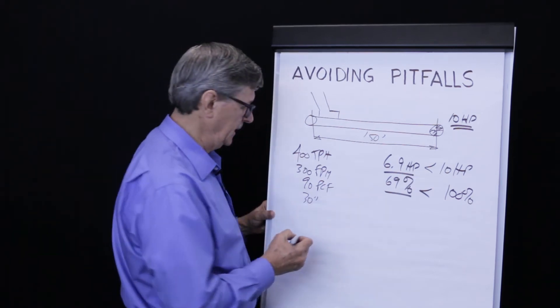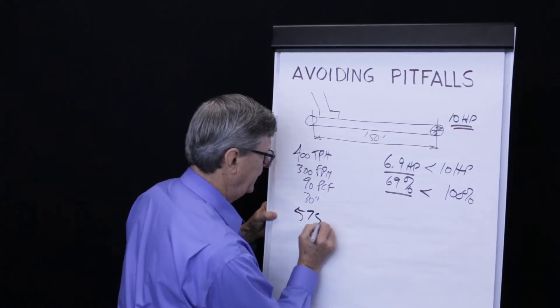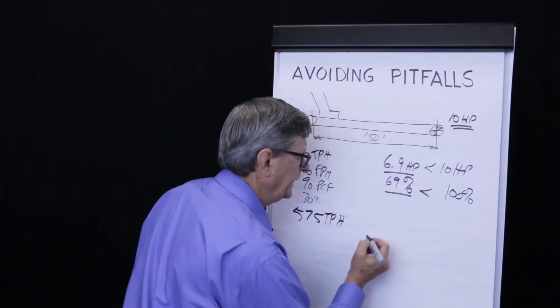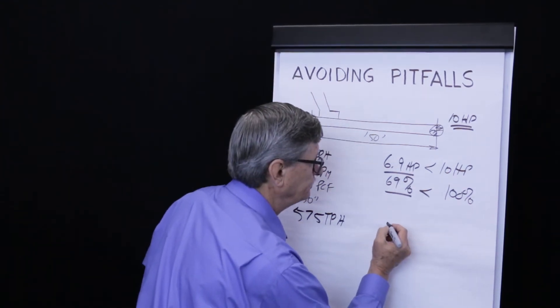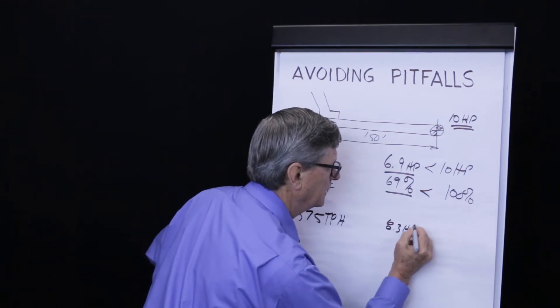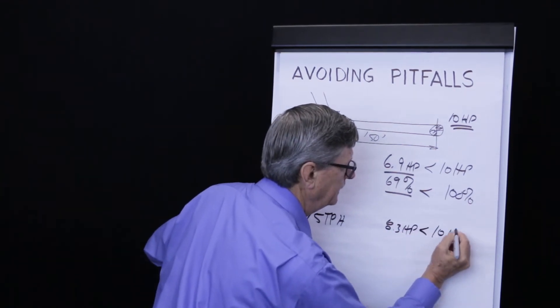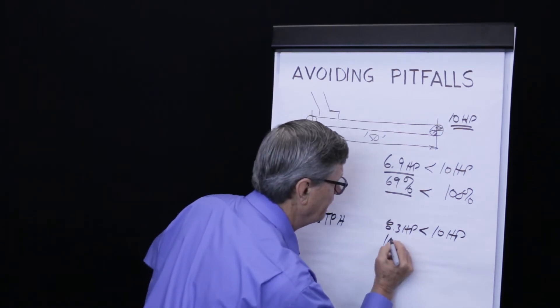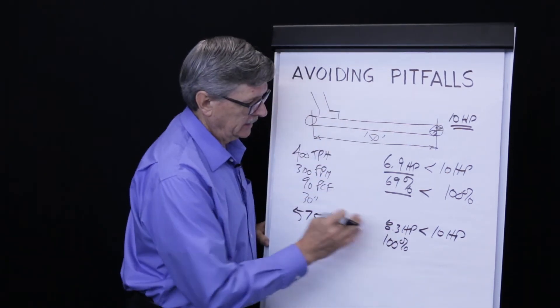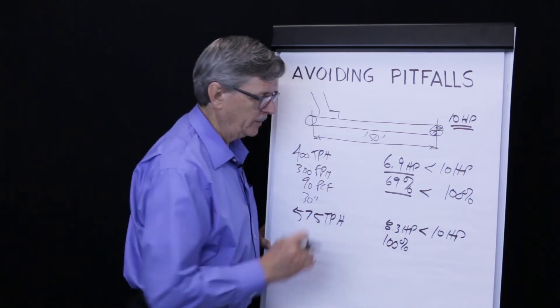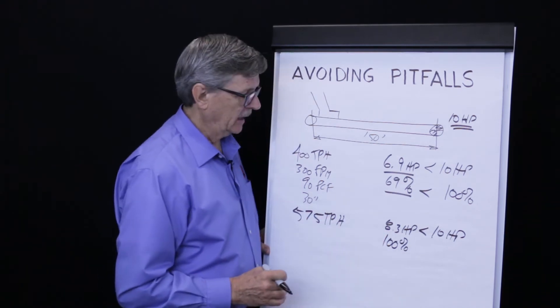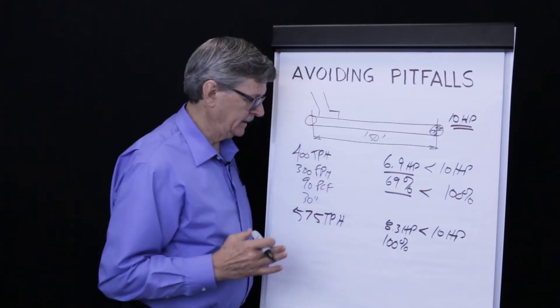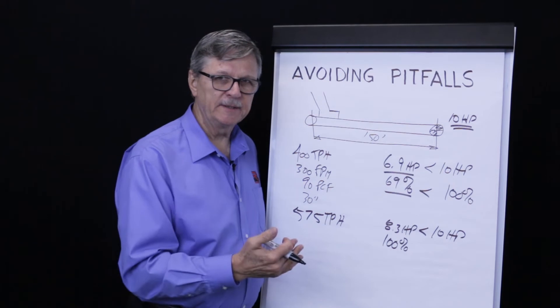In fact, as I'll show in a minute with the program, 575 tons per hour will actually require 8.3 horsepower to drive it, which is less than 10. And 575 tons per hour will completely fill the trough and will be running at 100% of the CEMA recommended fill factor. Let's say that there's continued pressure on operations to move more tons.